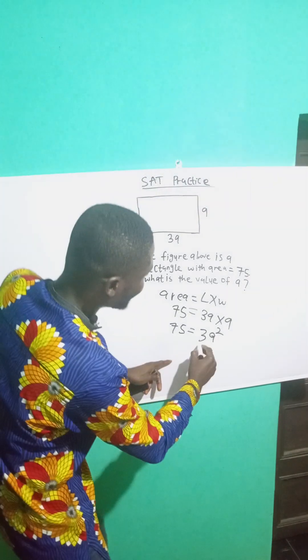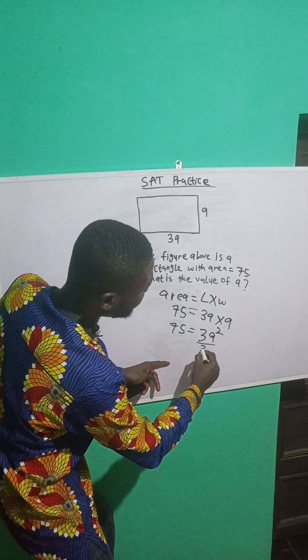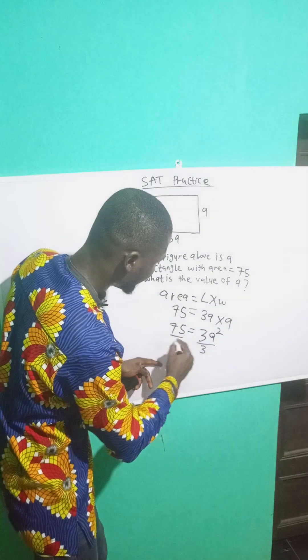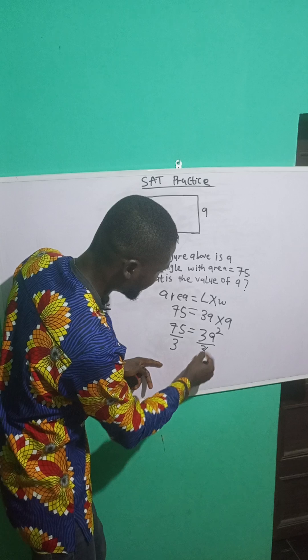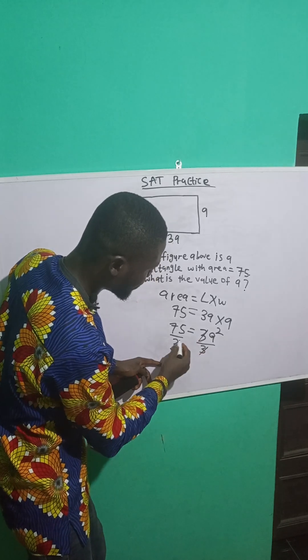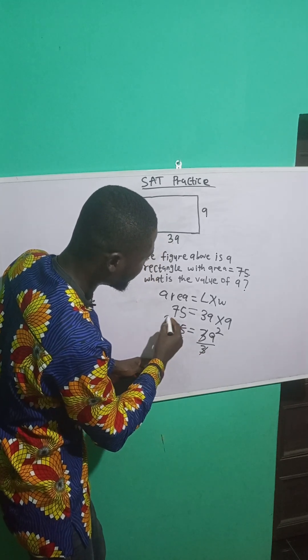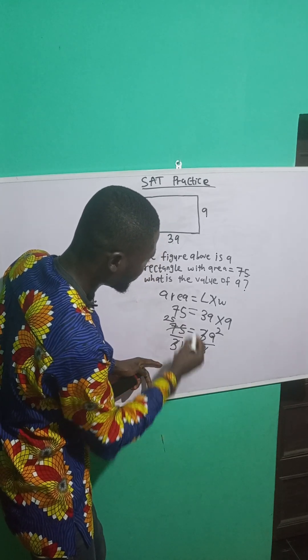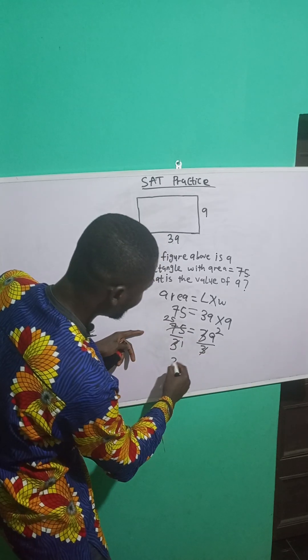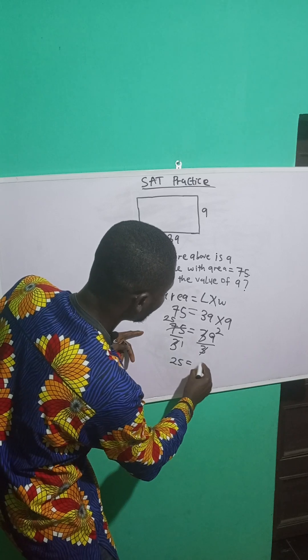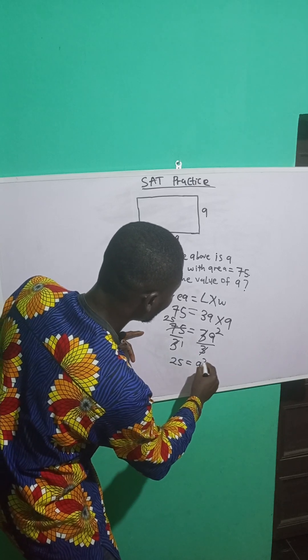So I'll divide both sides by the coefficient of A squared, which is 3. Divide by 3 — we cancel this off. 3 here becomes 1 and 75 here becomes 25. So I have that 25 is equal to A squared.